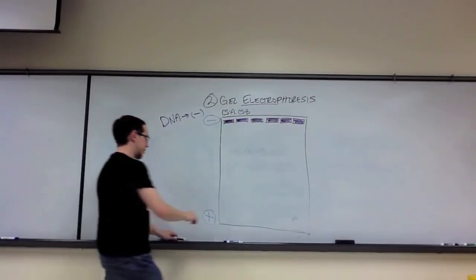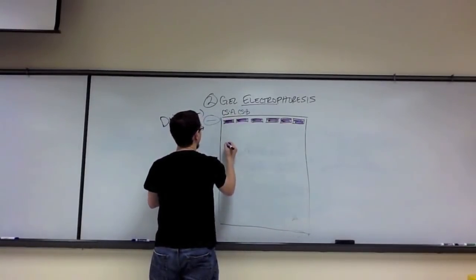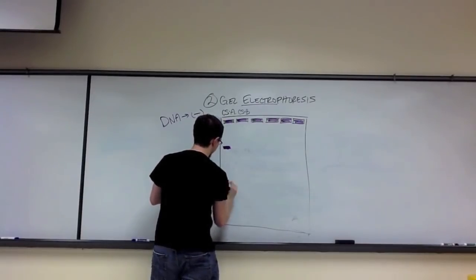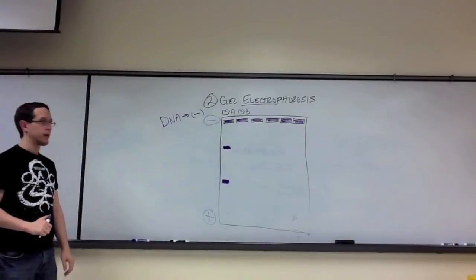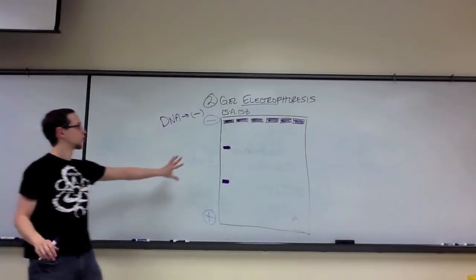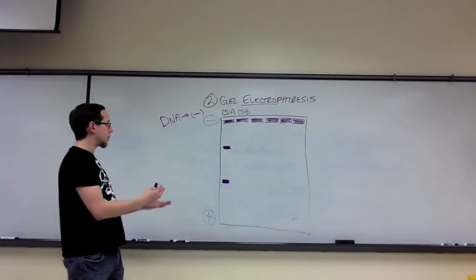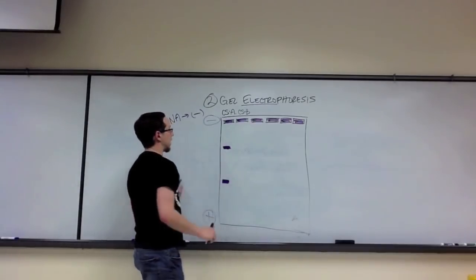Let's say that we get, for enzyme A with the crime scene DNA, bands that look something like this. It cuts it once, gives us two fragments. Those two fragments in large quantity give us these two bands.